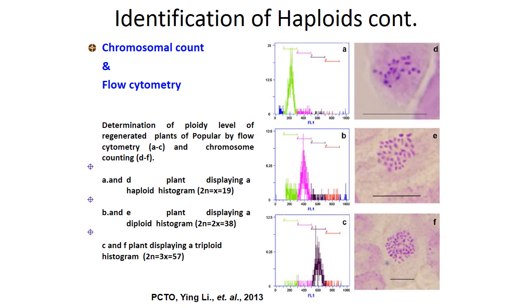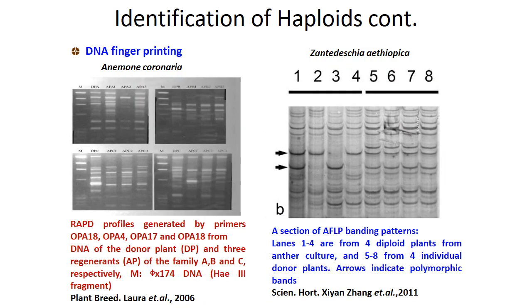The third technique is chromosomal count and flow cytometry. Flow cytometry is a technique to get a curve which gives the ploidy level. For example, in the last figure the plant is displaying a triploid histogram. Next is DNA fingerprinting — RAPD, AFLP, RFLP and CAP markers are commonly used in DNA fingerprinting to identify haploids.